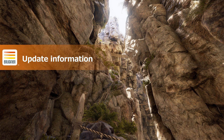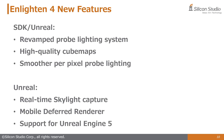Next, I will go over the major new features that have come to Enlighten. The following improvements apply to both the SDK and Unreal integrations: improvements to probe lighting, better looking cube map reflections, and smoother per-pixel probe lighting. There are also some Unreal-specific updates: real-time skylight capture, support for mobile deferred rendering, and support for Unreal Engine 5. Although these changes are listed as specific to Unreal, it is possible to achieve similar functionality within your own engine using Enlighten, and support is available if assistance is needed.